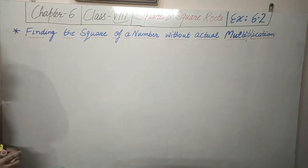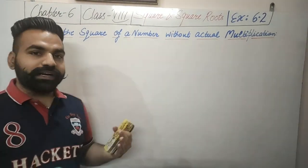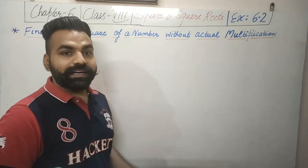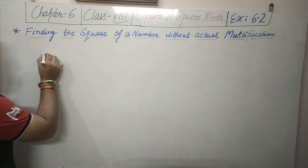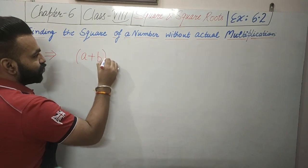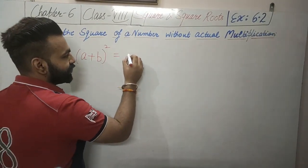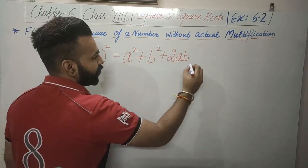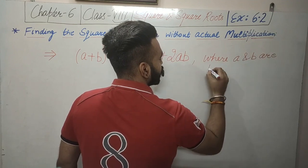First is finding the square of a number without actual multiplication. If we have to find the square of a number, one method is to multiply that number twice, which is the definition of the square. But if we want to calculate the square without actual multiplication, there is a formula which states that (a + b) whole square equals a squared plus b squared plus 2ab, where a and b are two natural numbers.